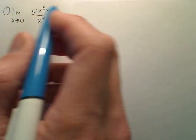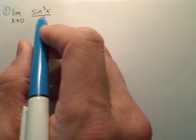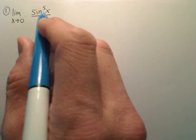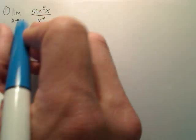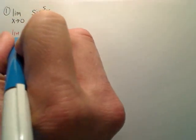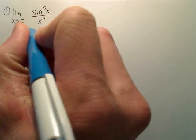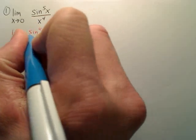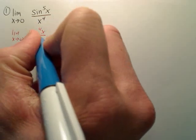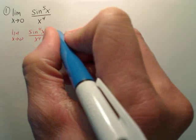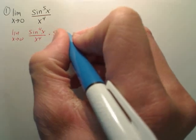If I want to solve this limit, basically what we're going to do here is rewrite this as the limit as x approaches zero — I'm going to write it as sine 4x over x to the fourth, times sine x.